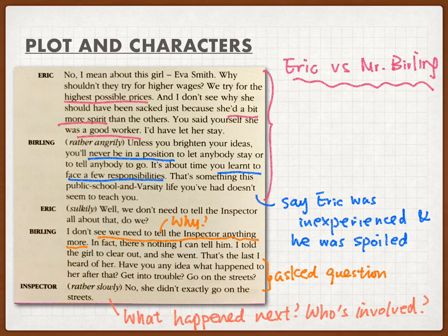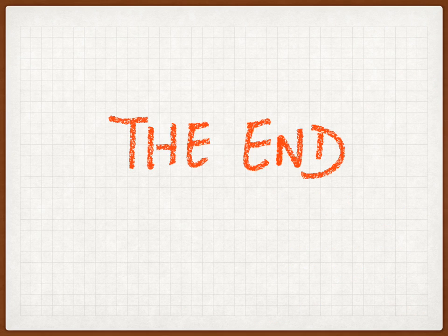Eric felt very embarrassed — like a father complaining about you and lecturing you in front of an outsider. Then Mr. Berlin cut sharp saying there shouldn't be much more the inspector needed to know: 'I fired her. She left. That's it.' Mr. Berlin asked whether Eva was out on the street, jobless, homeless. The inspector replied that she didn't exactly go on the street — she wasn't homeless. So what happened next? Guess who was involved — we'll learn about that in the next video. That was the incident between Mr. Berlin and Eva. Thank you for watching.